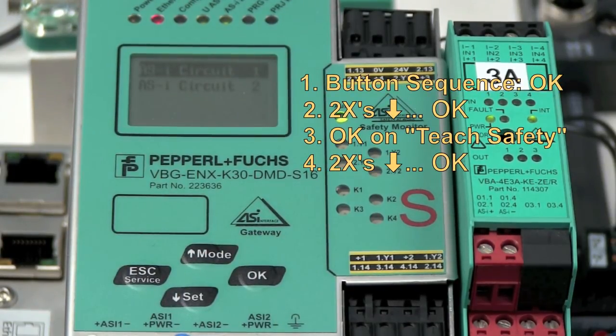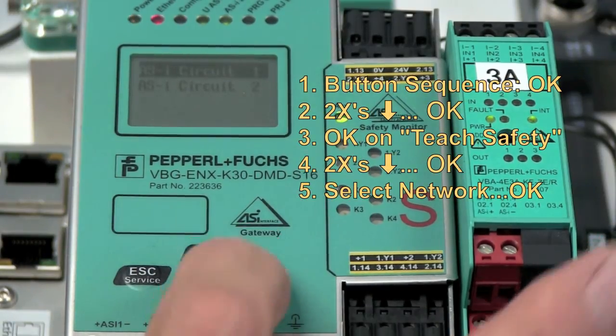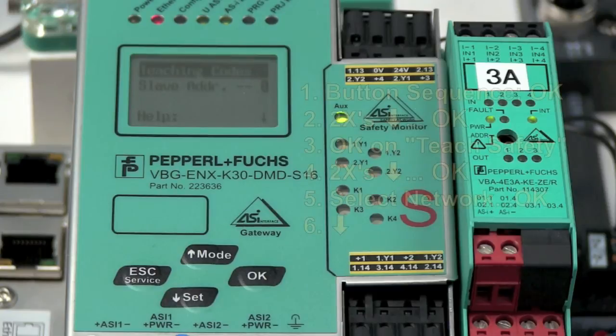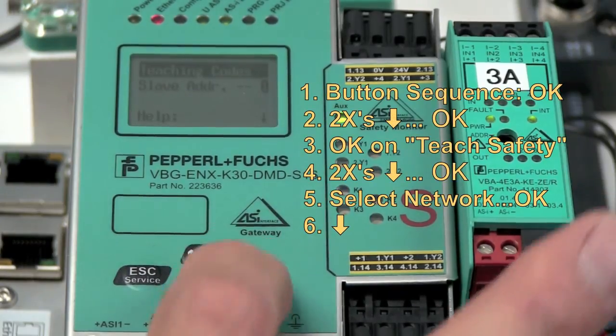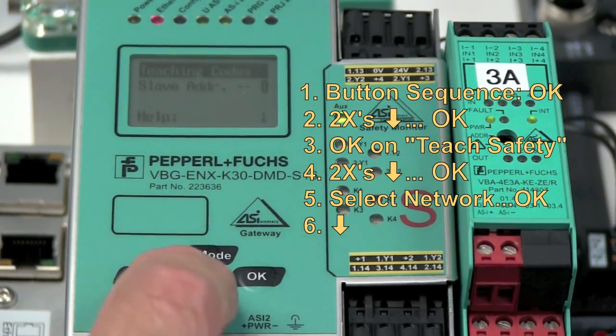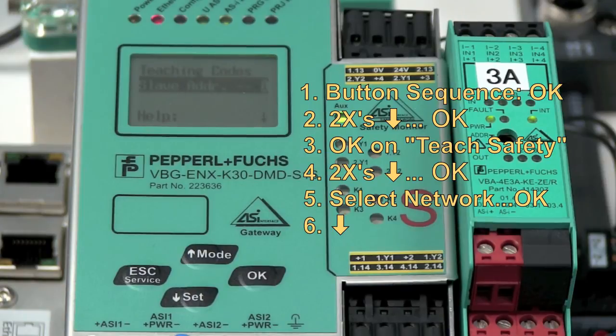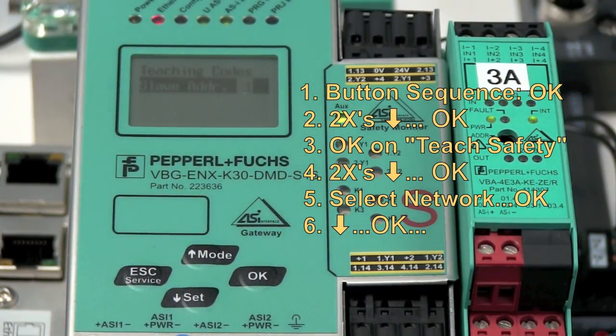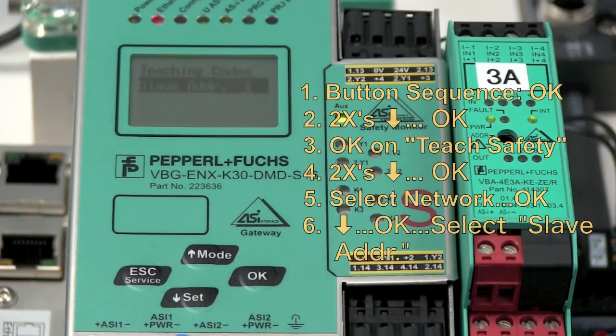The failed module and the replacement module were on network 1, so I OK this one. And then I come down to slave address, hit OK, and with the up and down buttons, I will select which address I will have to reteach.